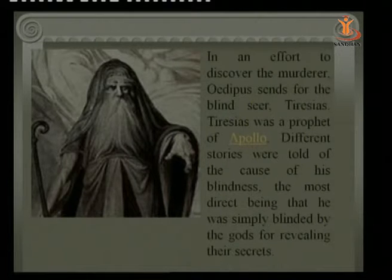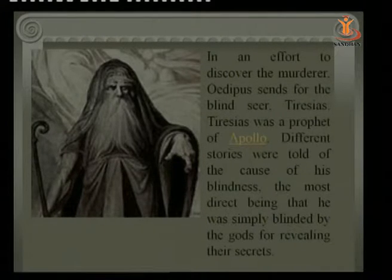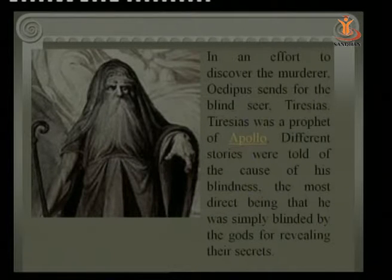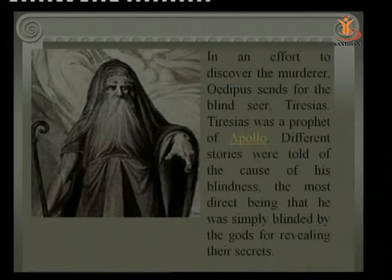One story about Tiresias is that he watched the goddess of wisdom Athena taking her bath and was therefore cursed and made blind. Yet another story is that he stabbed snakes who were mating, for which he was cursed with blindness, and was further condemned to live as a woman for seven years. There are many stories regarding Tiresias, but overall in Sophocles' Oedipus Rex, he is taken as the prophet of Apollo who can foretell the future.